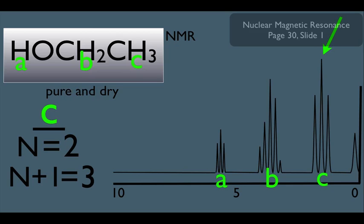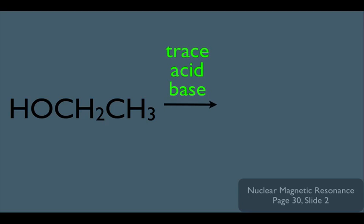So notice here, running this sample in pure and dry conditions yields what we would expect on the HNMR. However, this is not typically how alcohols are run in the NMR. Most alcohols need to be dissolved in some kind of solvent. And let's say that particular solvent happens to have a trace amount of acid or base.